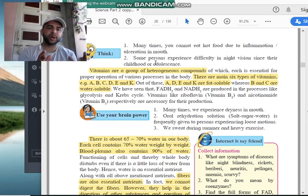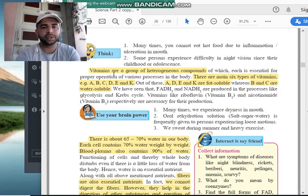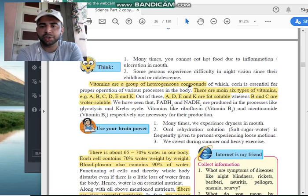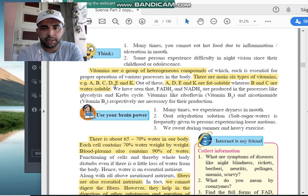Vitamins are actually a combination of many more compounds together. Vitamins are a group of heterogeneous compounds, and there are mainly six types of vitamins that you require: A, B, C, D, E, and K.